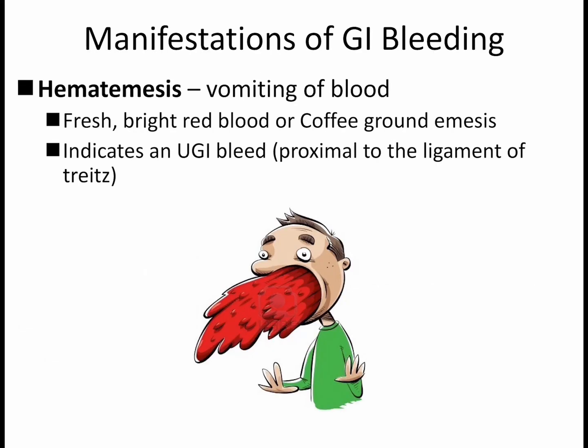The first manifestation of GI bleeding is hematemesis — vomiting of blood. This can mean vomiting of fresh bright red blood or even coffee ground emesis. Hematemesis indicates an upper GI bleed, meaning it's proximal to the ligament of Treitz.